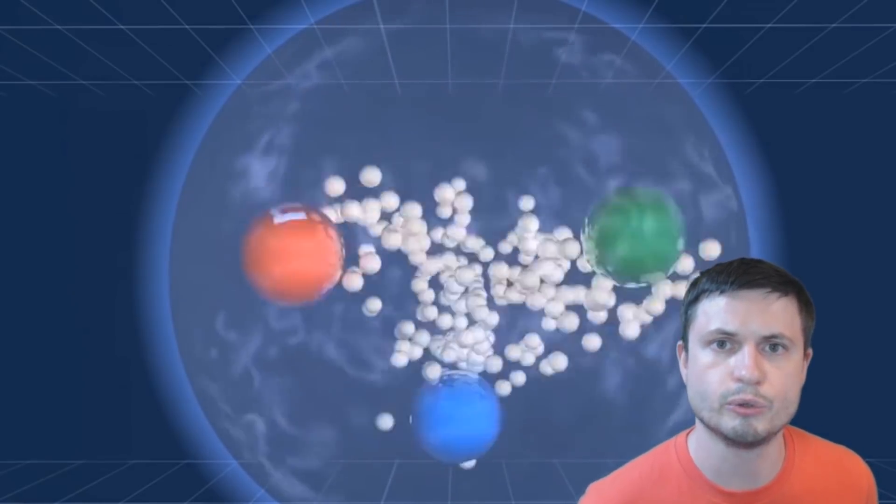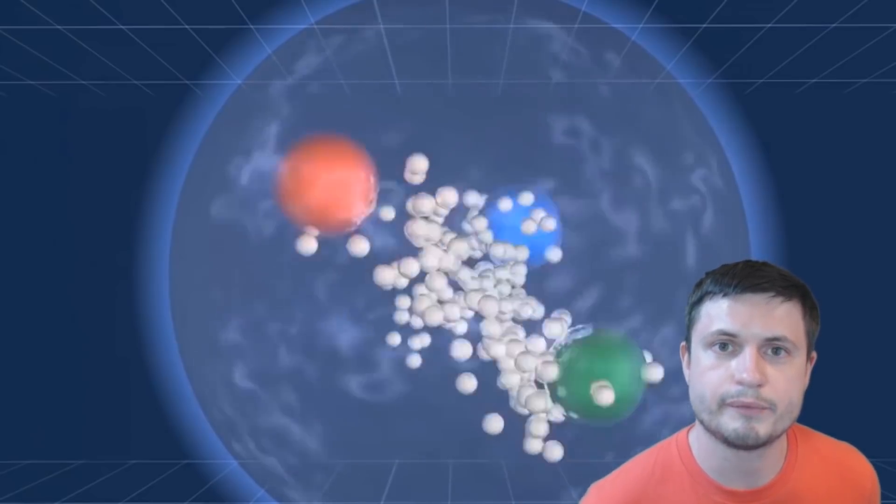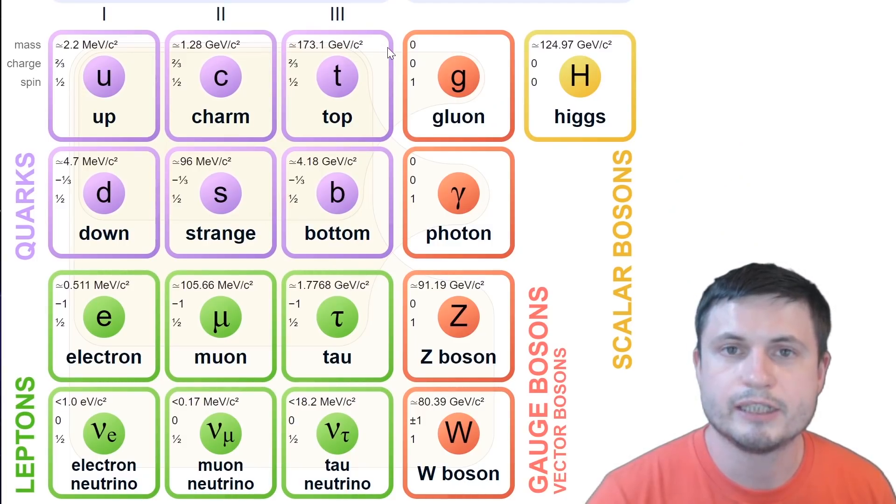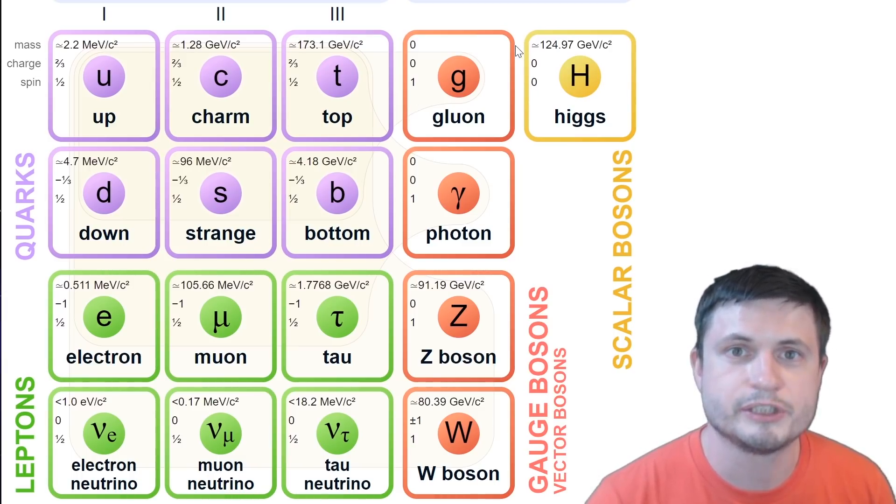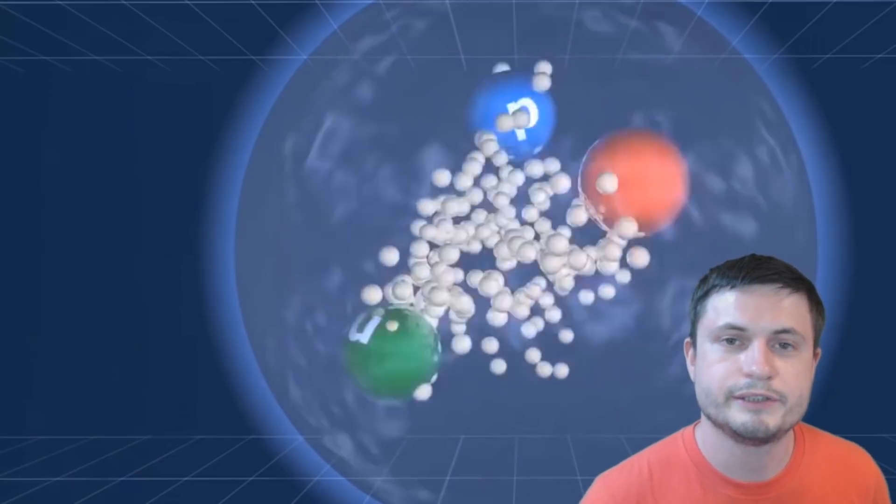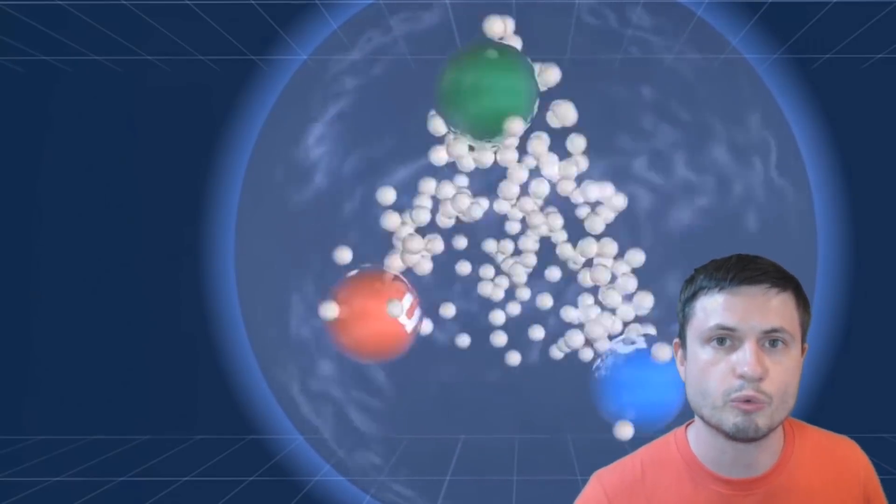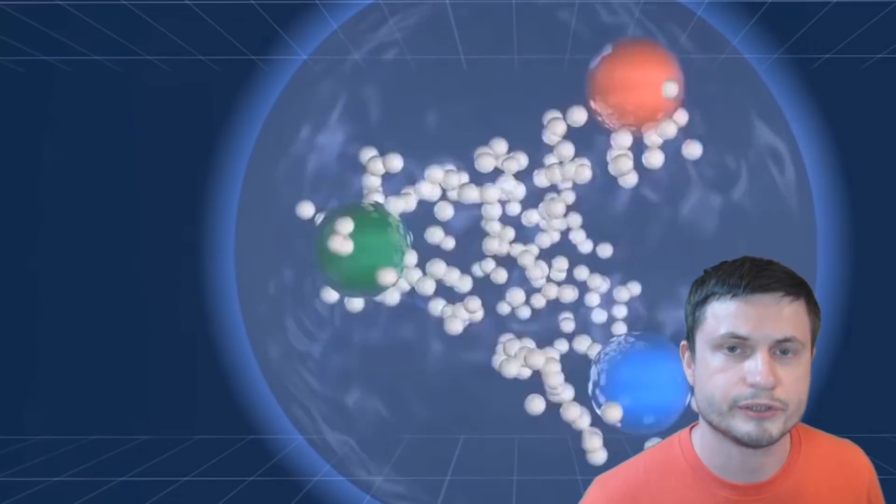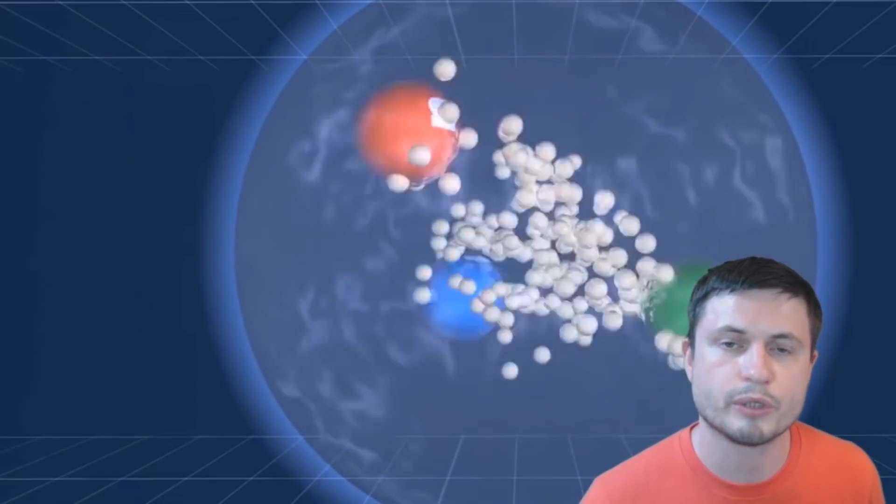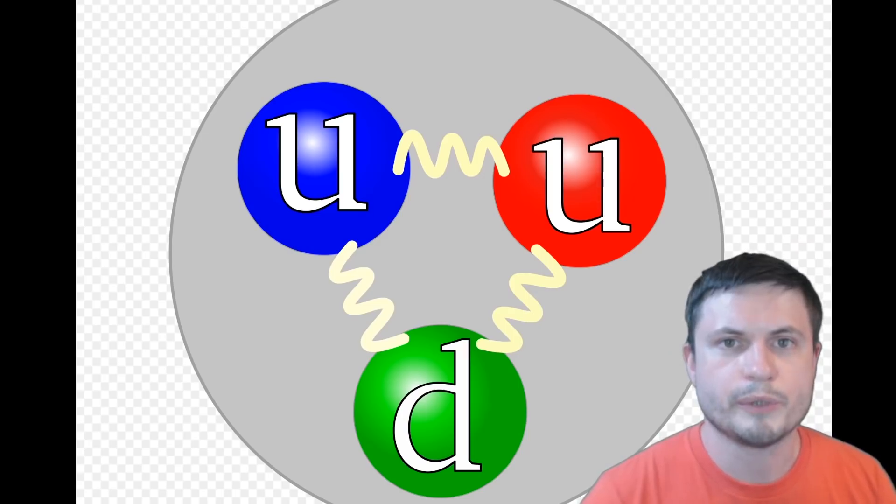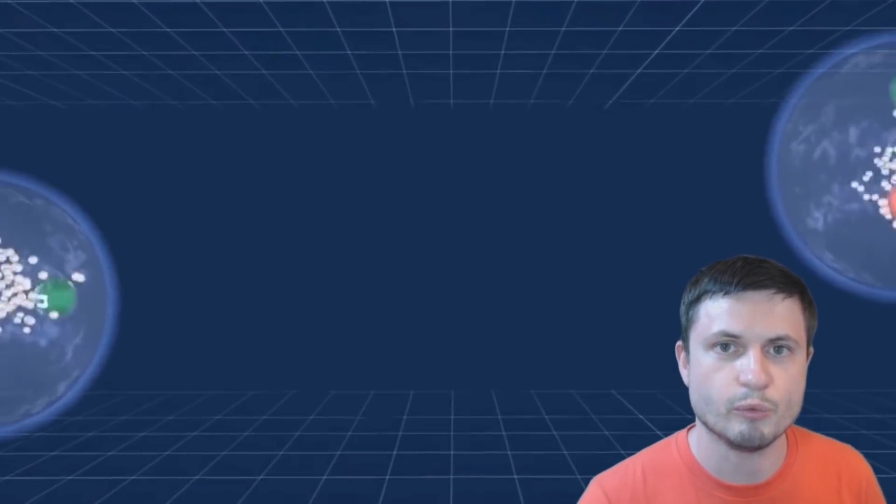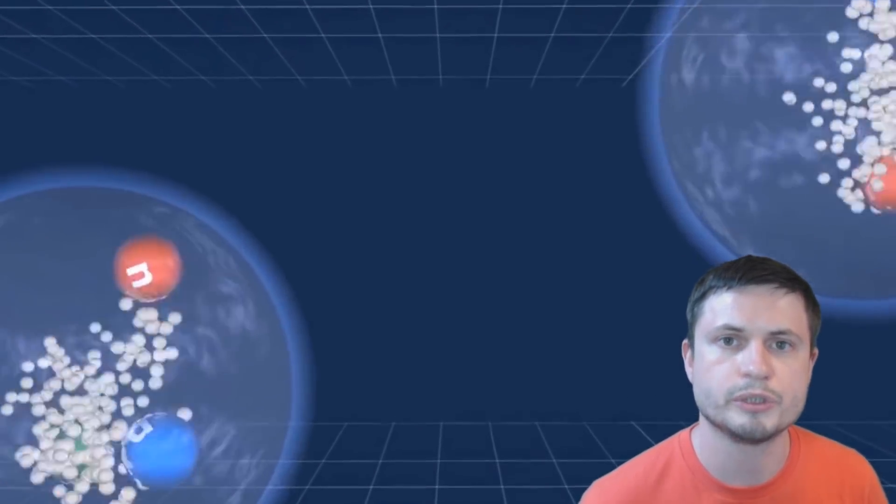These are quarks and gluons. Quarks are these things right here, and gluons are this right here. Now this might not really make sense right now, but just bear with me. What you can see from this simulation is that the gluons are sort of holding quarks together. There are three quarks here. For example, two up quarks and one down quark will create a proton, and two down quarks and one up quark will create a neutron. But these tiny white things, these tiny white particles, are gluons holding them together.